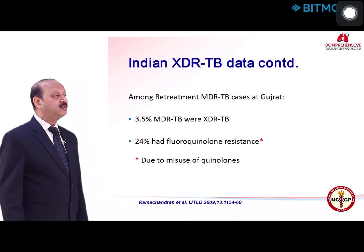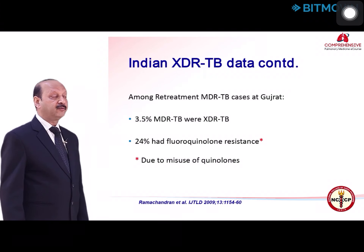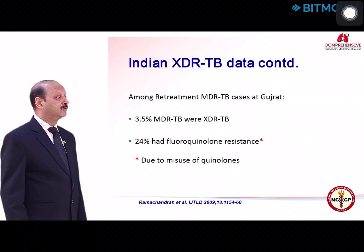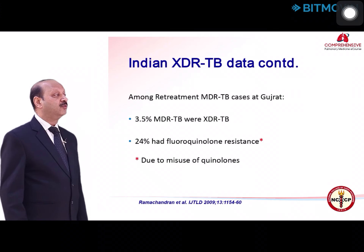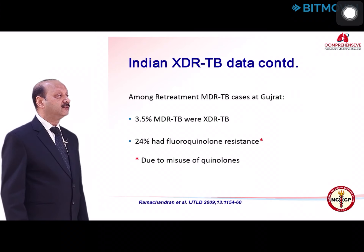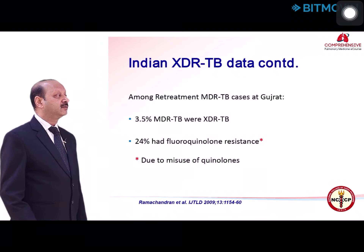Regarding XDR tuberculosis, as per data from Gujarat, 3.5% of MDR cases were XDR tuberculosis, and 24% of MDR cases had fluoroquinolone resistance, mainly because of the misuse of anti-TB drugs.